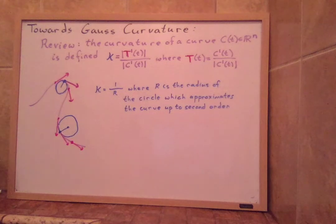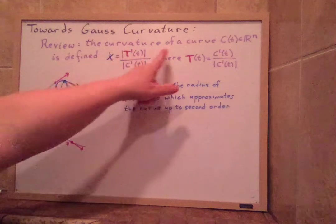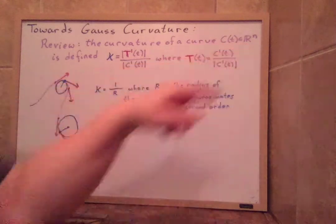Okay, towards defining Gauss curvature, let's first review what is the curvature of a curve, C(t), in R^n.